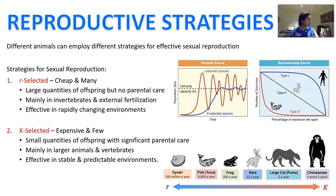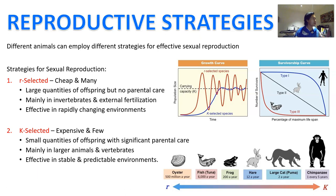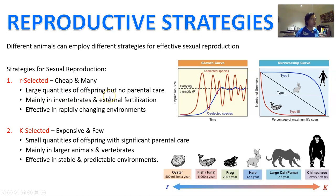Reproductive strategies — this isn't specifically in the coursework, but different animals will deploy different strategies for effective sexual reproduction. These strategies can be summarized as number one: the cheap and many, or R-selected strategy, or the expensive and few, which is the K-selected strategy. The R-selected strategy — the letter R represents the exponential growth that organisms can have — involves large quantities of offspring, but there's no parental care involved whatsoever. This mainly happens in invertebrates and animals that employ external fertilization.